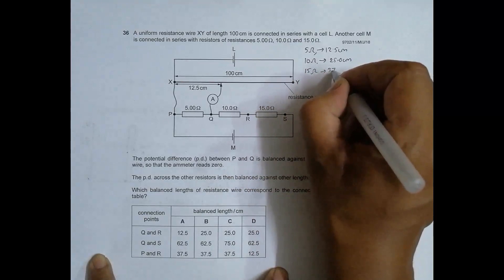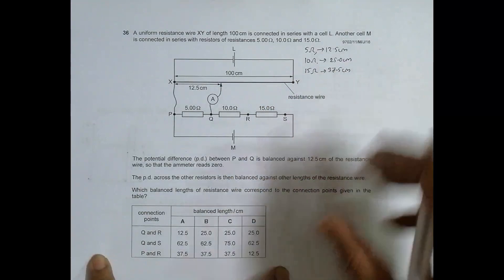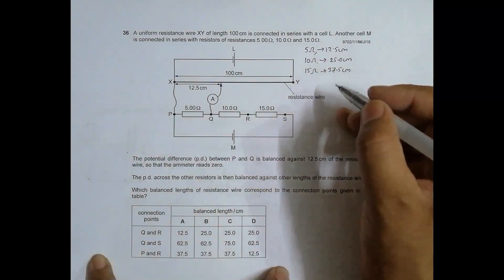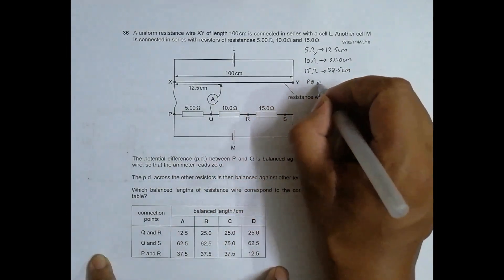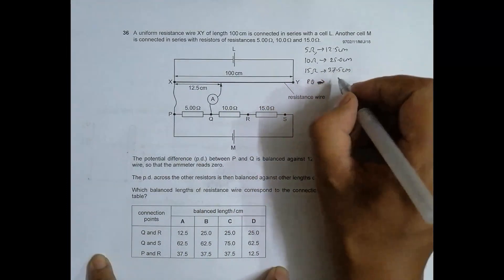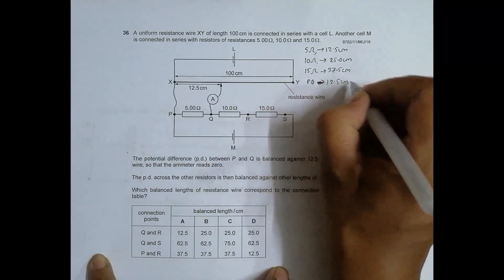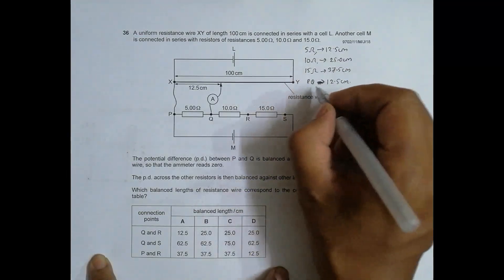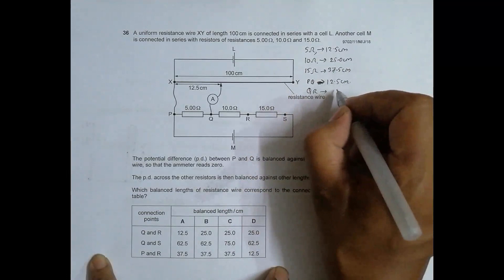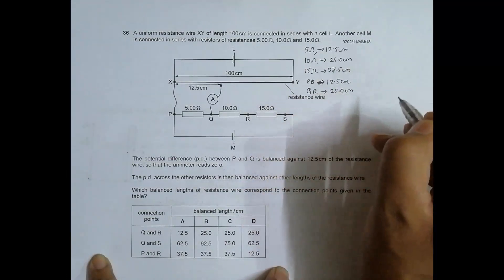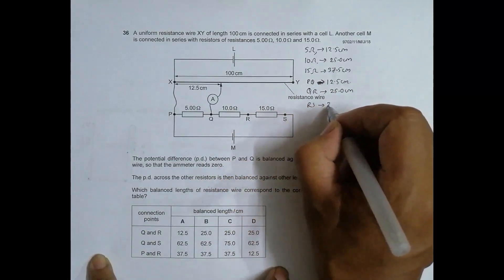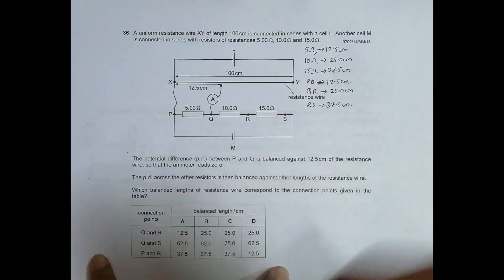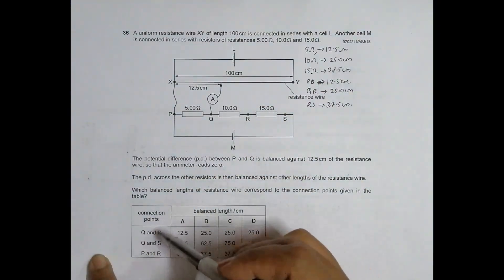It's because the balance length is proportional to the resistance. So that means 5 ohm is PQ, so PQ corresponds to 12.5 centimeters. Then we have 10 ohm, so QR corresponds to 25.0 centimeters. And 15 ohm is RS, so RS corresponds to 37.5 centimeters.